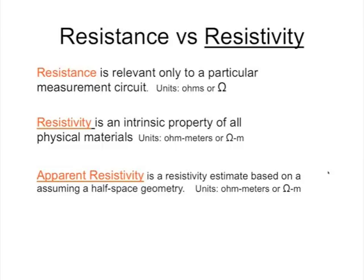There's also the concept of apparent resistivity, which is an estimate of that resistivity property based on an assumption of half-space geometry. Going between that apparent resistivity estimate to some kind of model that has the different resistivities of different earth materials at different depths and positions — that's a process of modeling.